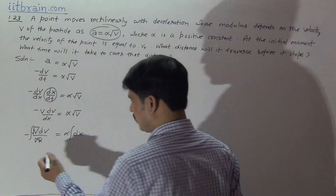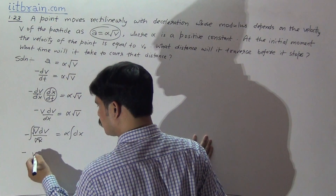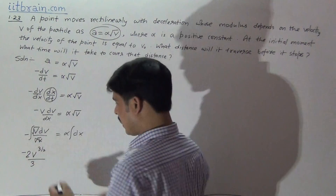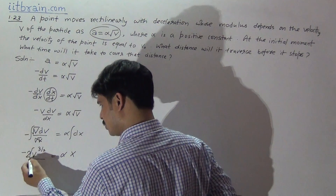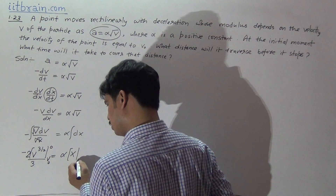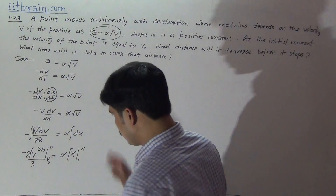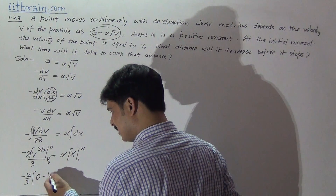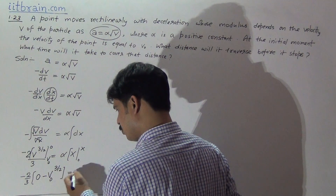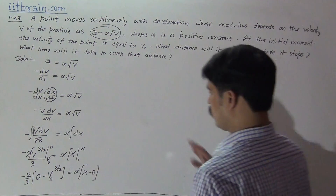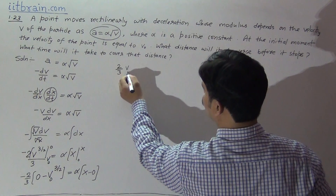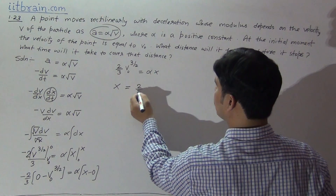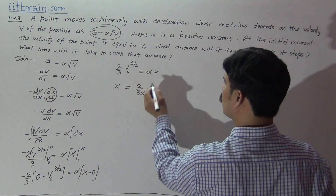v dv over root v with negative sign is alpha dx. On taking integration and cancelling, you can cancel root v by making the numerator v. It is minus v to the power half, giving v to the power 3 by 2 over 3 by 2. This 3 by 2 written in reverse gives alpha x. Limits of v are from v₀ to 0 and position from 0 to x. So the result becomes minus 2 by 3 times v₀ to the power 3 by 2 equal to alpha x.